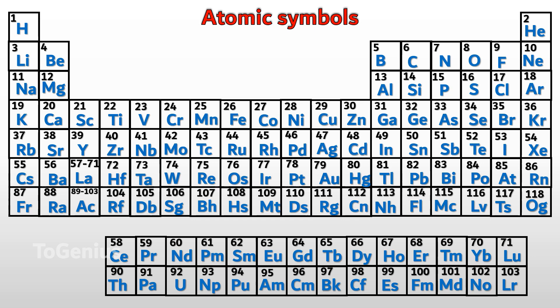With every element number filled in, the atomic number increases by one, which means one proton is added to the nucleus. Additionally, if the number of protons increases by one, the number of electrons also increases by one to maintain neutrality, since the number of protons and electrons in a neutral atom is equal.